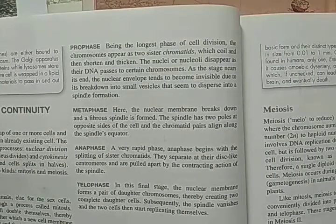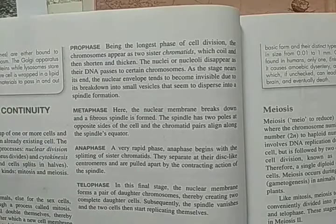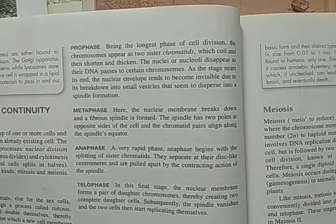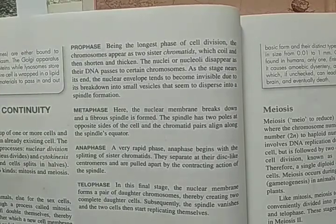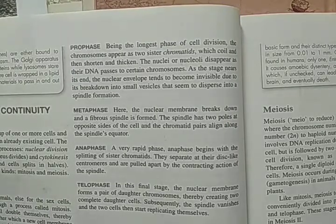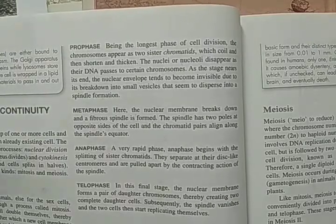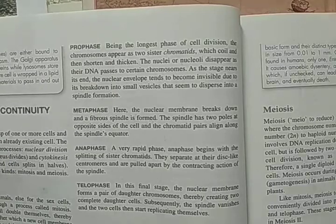Next is metaphase. Here, the nuclear membrane breaks down and a fibrous spindle is formed. The spindle has two poles at opposite sides of the cell, and chromatid pairs align along the spindle's equator. Next is anaphase — a very rapid phase. Anaphase begins with the splitting of sister chromatids. They separate at their disc-like centromeres and are pulled apart by the contracting action of the spindle.